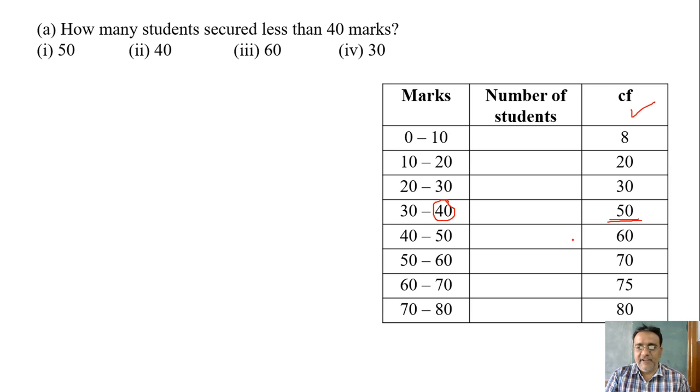50, first option is right. Now for the second option, we have to find the normal frequency distribution table. So let us find: the first one is 8, second one 12, next 10, next 20, next 10, next 10, next 5, last 5. This is the frequency of all the class intervals.